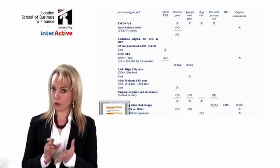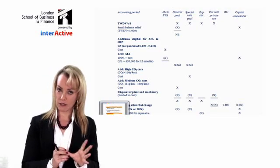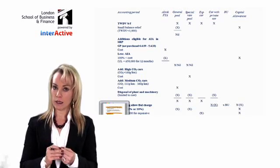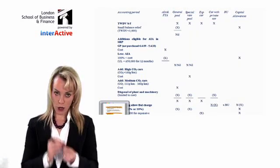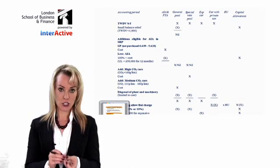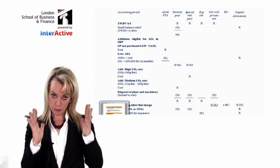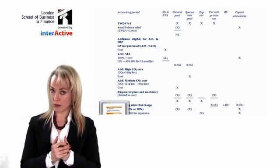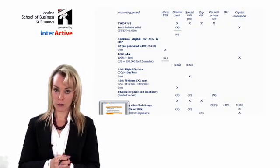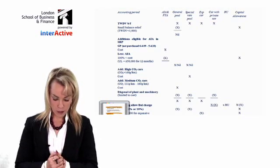We talked about all the different categories. And then we were talking about all the allowances you get — the annual investment allowance (remember, not for cars, maximum £50,000), the 100% FYA for low emission cars, the 40% FYA for other plant and machinery but not cars, not things in the special rate pool, bought in that special offer period between the 6th of April 2009 and the 5th of April 2010. Can you see all these rules you've got to learn? It's a lot, so that's why it needs practice to make perfect.